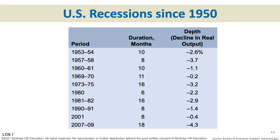Looking at the decline in real output — the percentage decline in GDP — sometimes it's not so significant. In 1960–61, GDP only declined 1.1%, and in 1969–70 it was only 0.2%. But the 2007–2009 recession was very prolonged and GDP fell 4%. That's a significant decline.